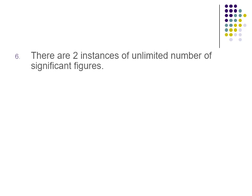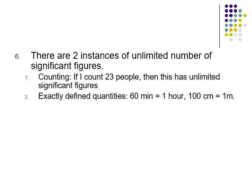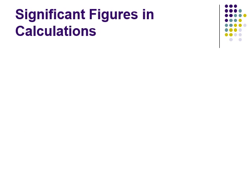There are two cases where a number has unlimited significant digits. First is counting: if I actually count out 23 people, that has unlimited significant figures because there's no estimation. When something is counted, sig fig rules do not apply. Second is exactly defined quantities: 60 minutes equals one hour — even though '60' would technically be one significant digit, together it's an exactly defined relationship and has an infinite number of significant digits. It's not an estimate.